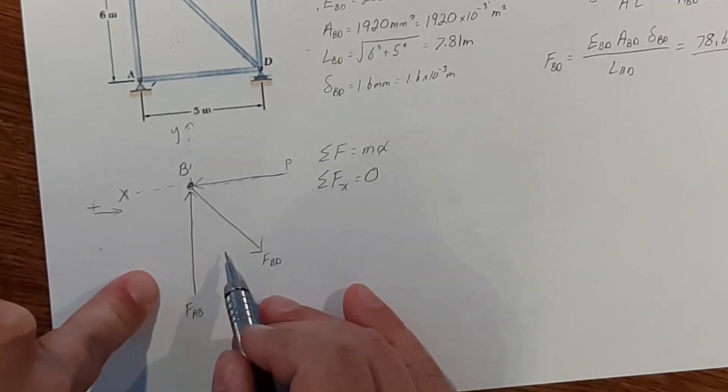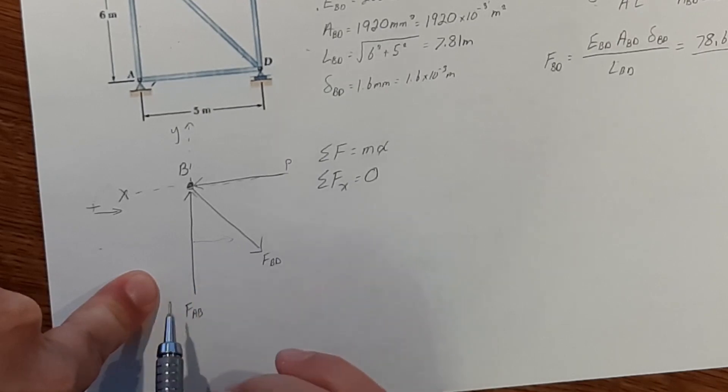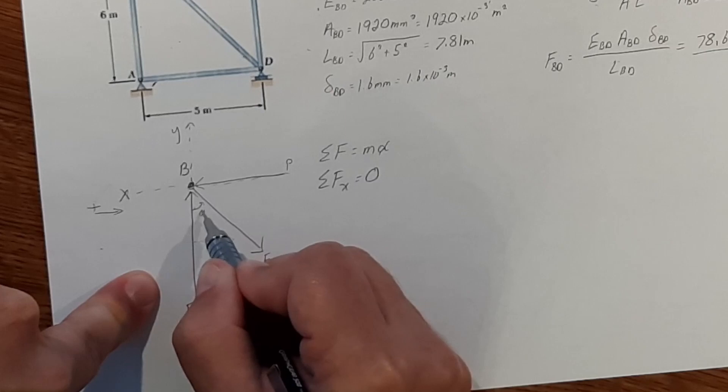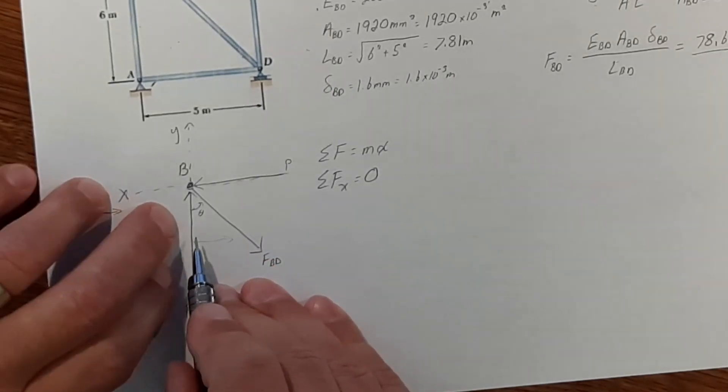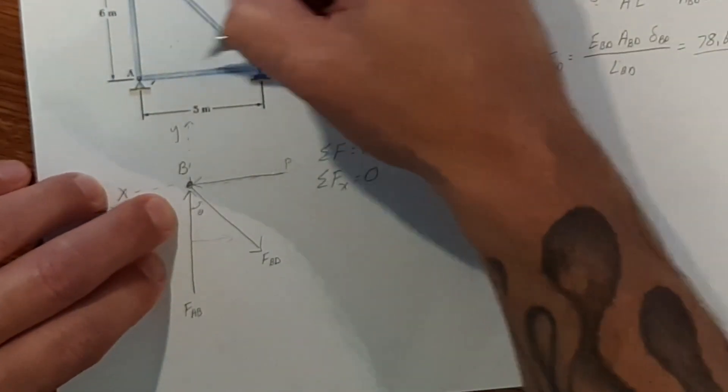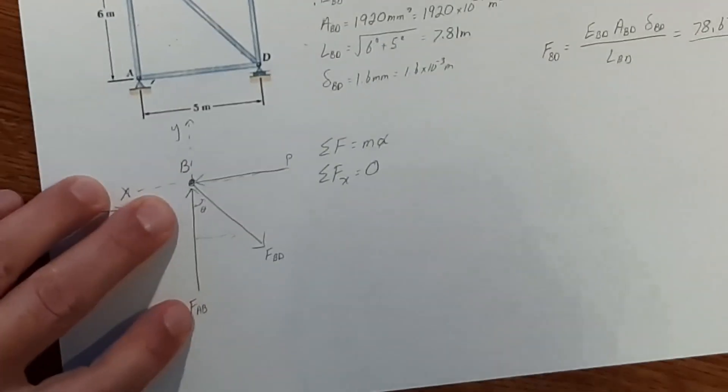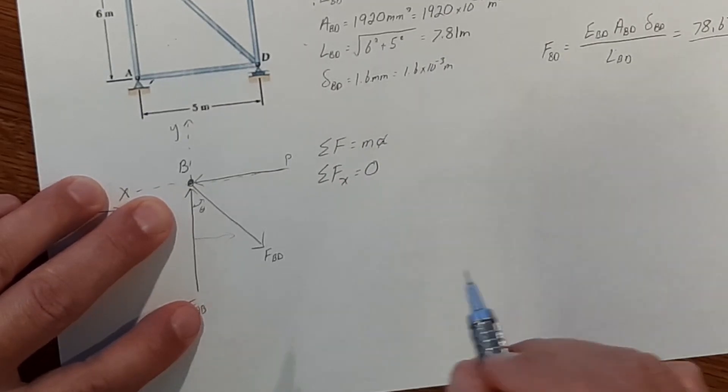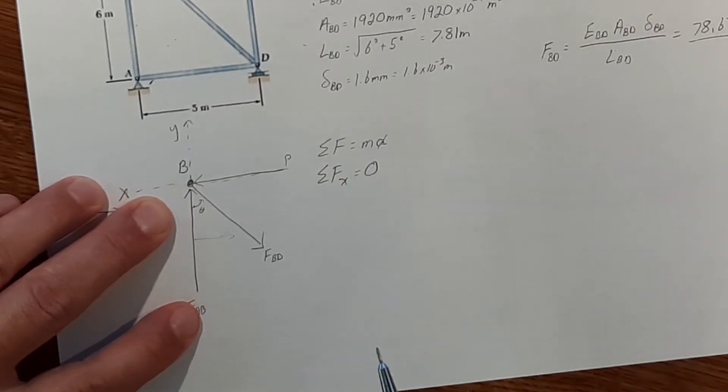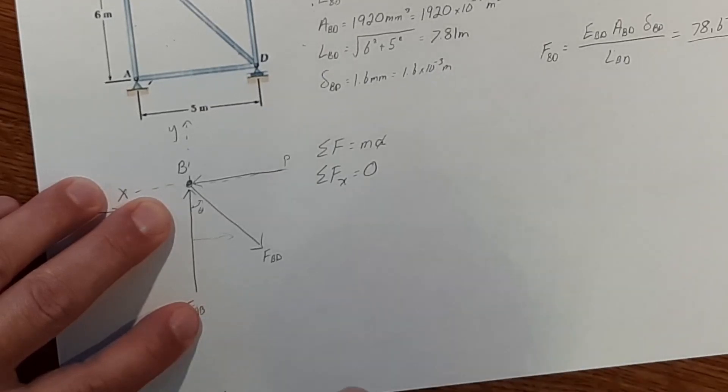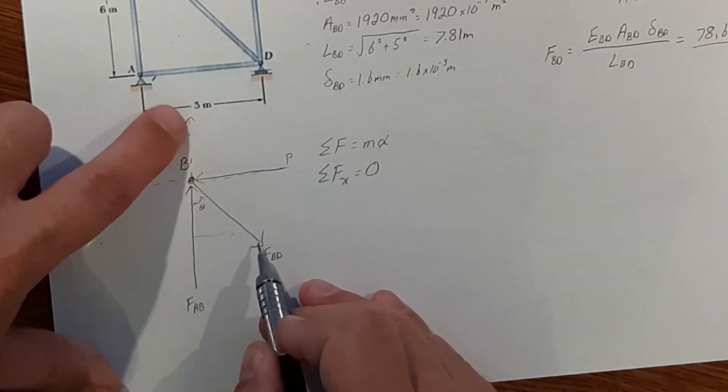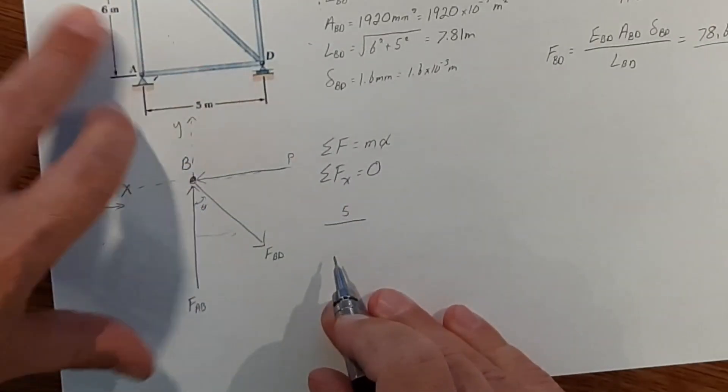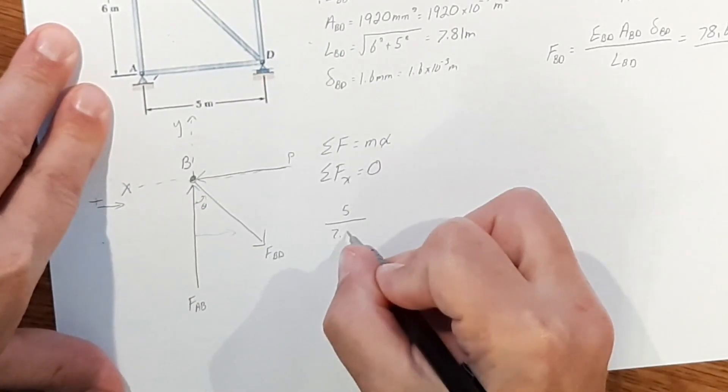Now one way we can do that is we know it's going to be sine of this angle theta. Now we don't know angle theta. Yes, we can do the trig and figure it out. But one easy way to do it is knowing that sine is opposite over hypotenuse. So our opposite is 5, and our hypotenuse is the length of BD, which is 7.81.